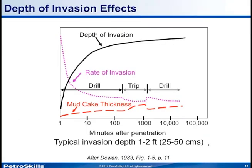Now, a quick discussion about the invasion effect. The depth of invasion increases over time after a zone has been penetrated, while the rate of invasion decreases progressively, changing when we trip because there is no circulating mud. Mud cake thickness is increasing, and when we stop circulation between drilling intervals, the mud cake thickness increases further. The thicker the mud cake, the less likely it is that borehole-wall tools such as the density log will effectively measure bulk density at that particular location.